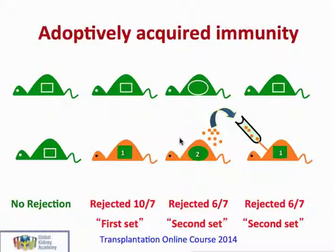Perhaps more importantly, if he then took lymphocytes from the spleen of the animal that had already rejected a graft and injected them into a naive mouse — that is a mouse that had never previously had a skin graft — it then rejected a foreign skin graft in six days. This was also a second set rejection and showed that the immunological memory and accelerated response could be transferred by lymphocytes.